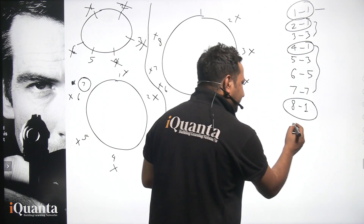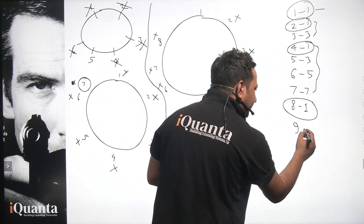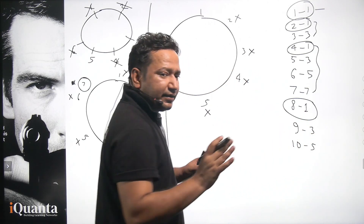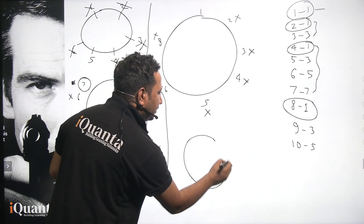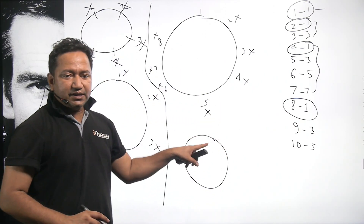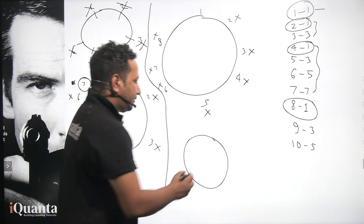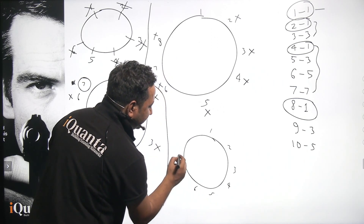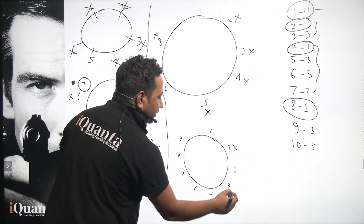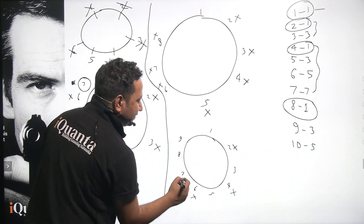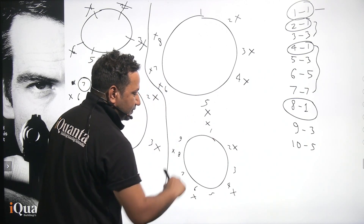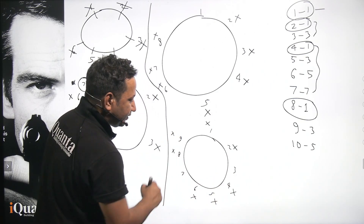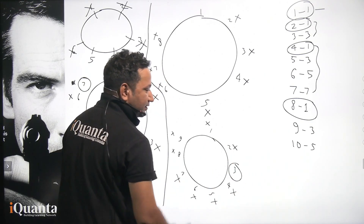The numbers resetting the pattern are powers of two. So for N=9, the third person should survive. Let's verify: one kills two; three kills four; five kills six; seven kills eight; nine kills one; now three kills five; seven kills nine; then three kills seven — so R=3 for N=9. The pattern is confirmed.